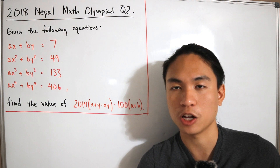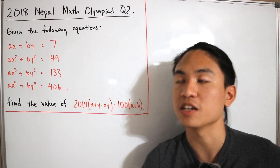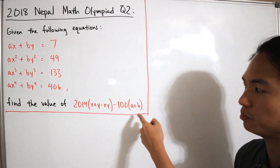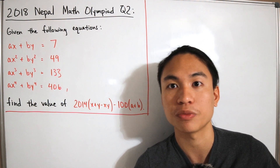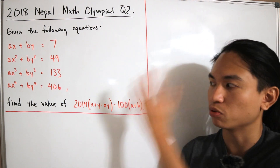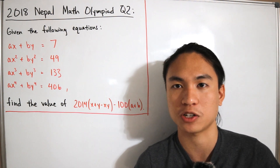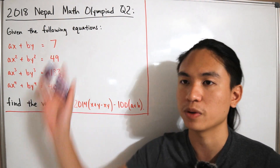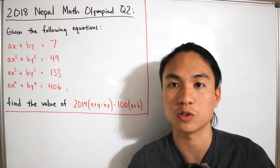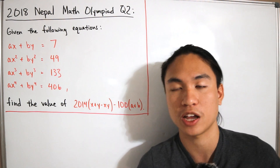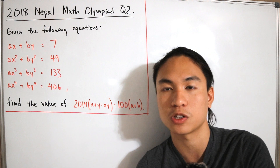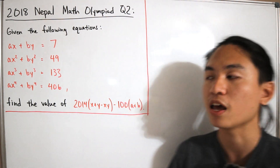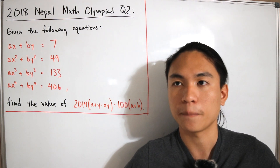Instead, we're going to take a creative hybrid approach. What we want to find are the combined values: x + y, x times y, and a + b. Once we have those three values, we can simply plug them into the expression and get the final answer without ever needing to isolate each variable individually.